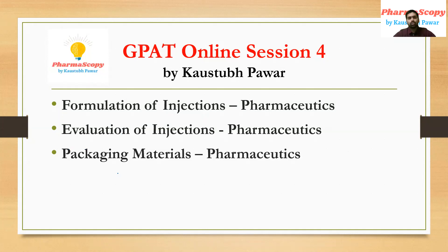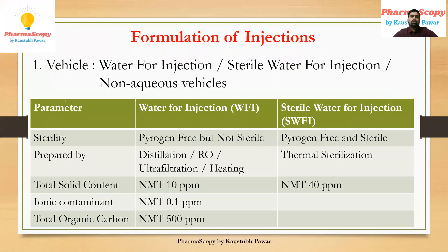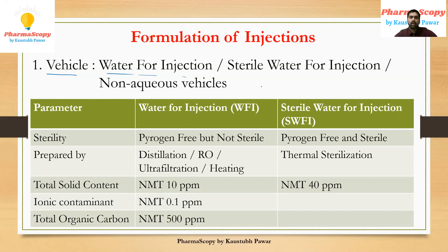So let's start with this fourth session. The first aspect of the parenteral or injectable is the vehicle, because to formulate any parenteral formulation we need a vehicle in which our drug and other excipients will get solubilized. For vehicle there are two aspects: first is the aqueous vehicle. In aqueous vehicles there are two types — water for injection and sterile water for injection.